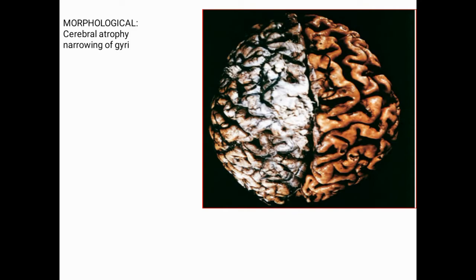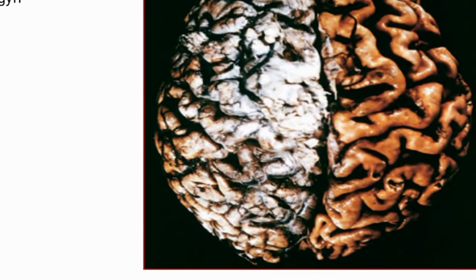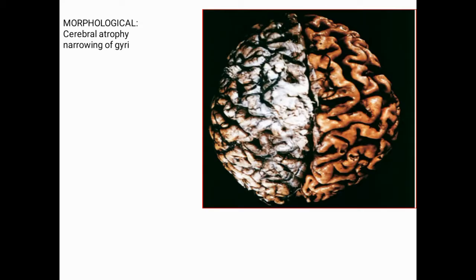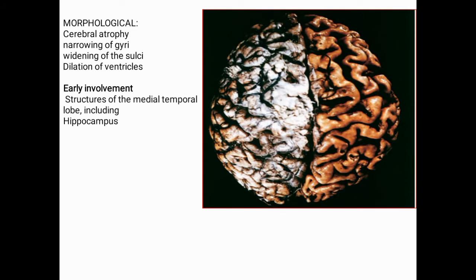Here is a picture showing the areas involved: the hippocampus, neocortex, and amygdala. Early involvement may not be apparent morphologically, but in later and more severe stages we will see it clearly.